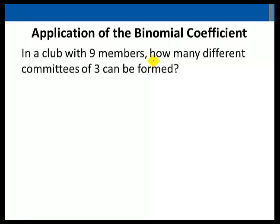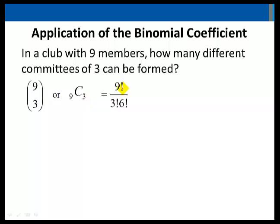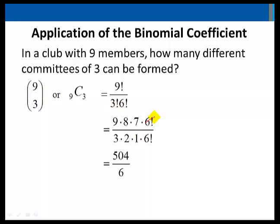Application: in a club with 9 members, how many different committees of 3 can be formed? For example, we might have a committee with Sue, Tom, and Kelly, or another with Sue, Tom, and Angel. We use the binomial coefficient, 9 choose 3, also written as subscript 9 C subscript 3. Evaluating: 9 factorial over 3 factorial times 6 factorial equals 9 times 8 times 7 times 6 factorial over 3 times 2 times 1 times 6 factorial, which simplifies to 504 over 6, equals 84.